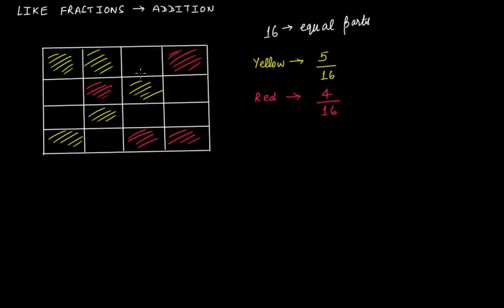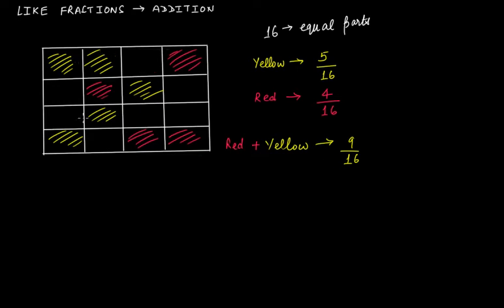Now if I ask what fraction all the shaded portions — red and yellow combined — make of the whole, just look at the shaded portions regardless of color. We have 5 yellow and 4 red, giving us 1, 2, 3, 4, 5, 6, 7, 8, 9 shaded portions — so the combined fraction is 9 by 16.